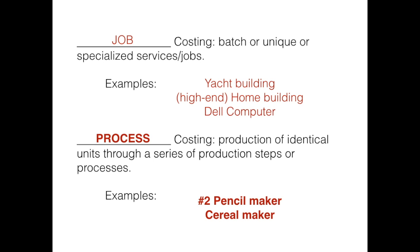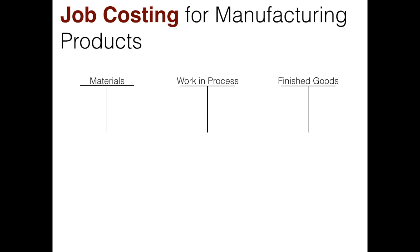As we go through this series of videos we're going to be talking about completing one special job for people. Before we get into our deeper discussion of job costing, let's do a little review of how costs flow through a manufacturer's inventory accounts. These are the three inventory accounts for a manufacturing company: materials, work in process, and finished goods.